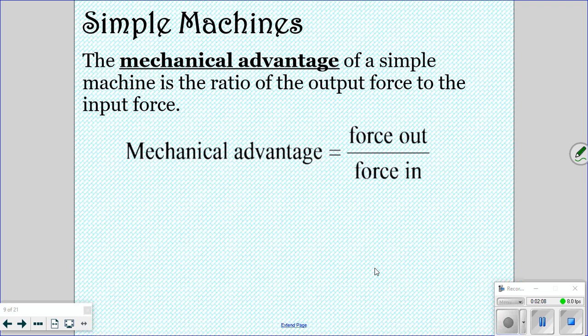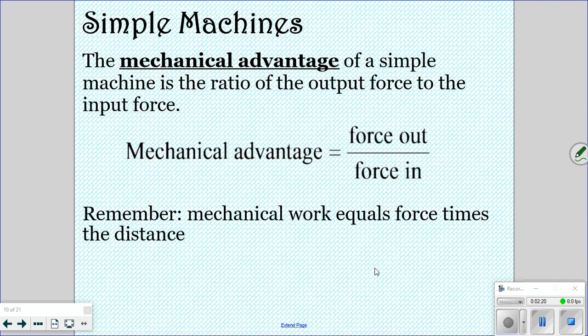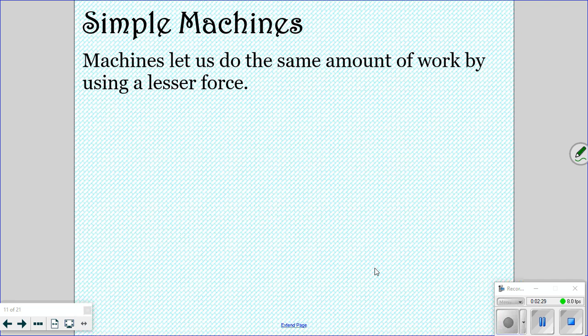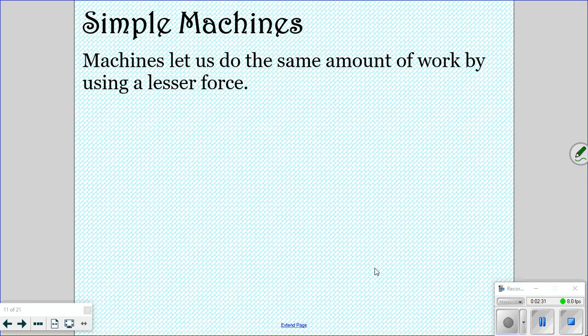The mechanical advantage of a simple machine is just the ratio of the output force to the input force. So whatever force is out over whatever force is in. Remember, mechanical work is force times the distance. So machines just let us do the same amount of work by using a lesser force. If you use a pulley or a lever, you're just going to be having less force to produce the outcome that you want.